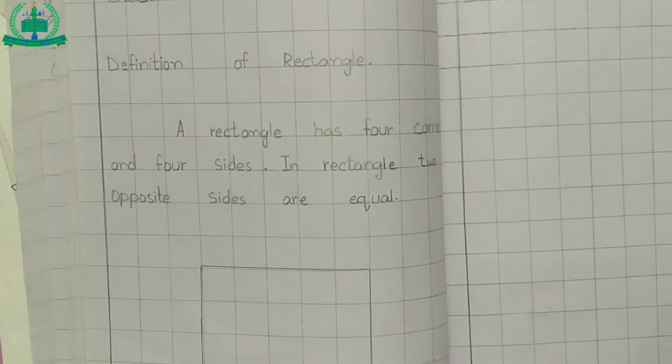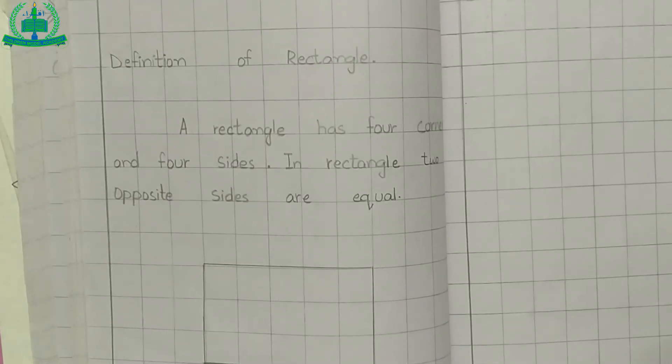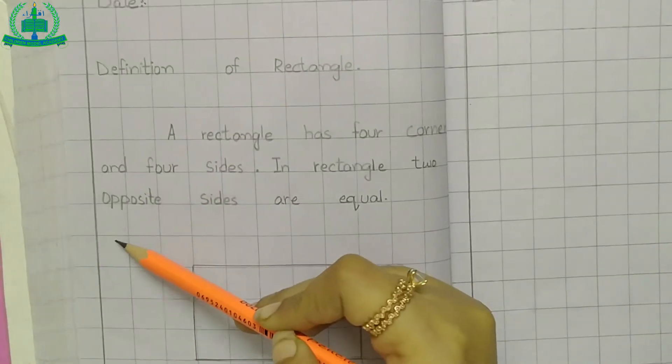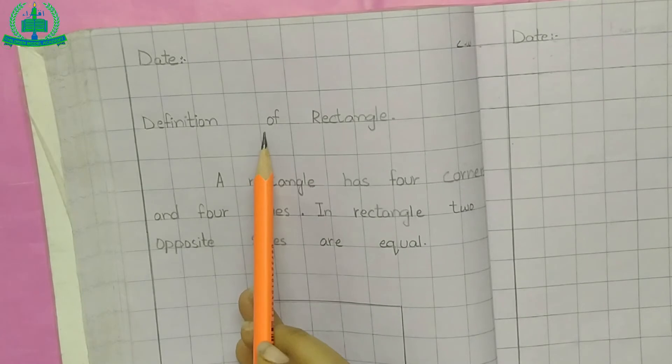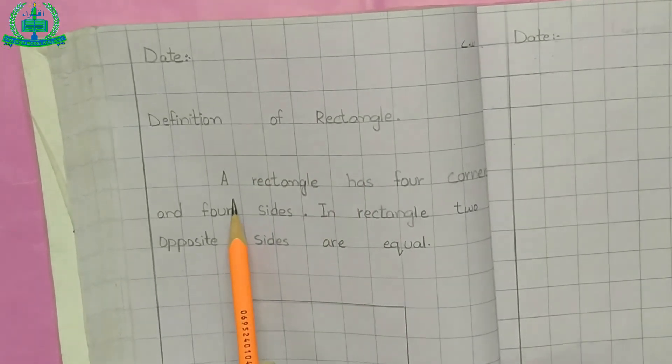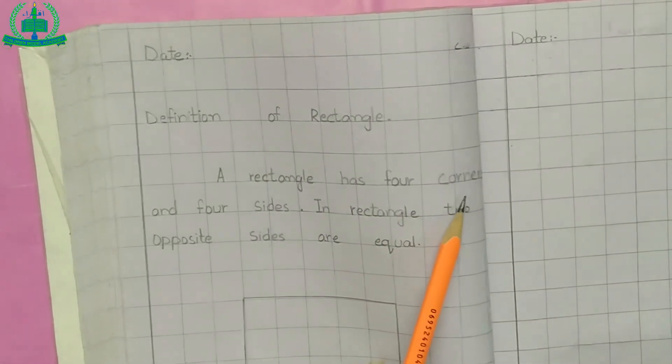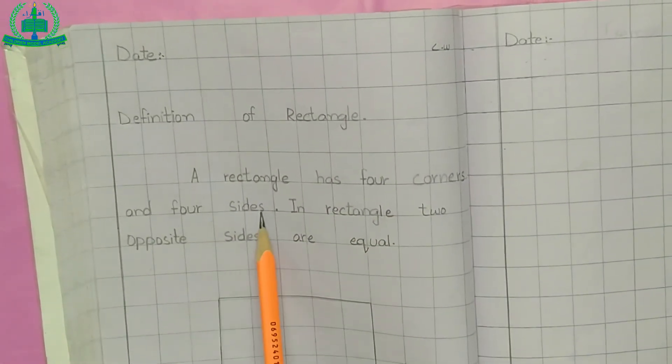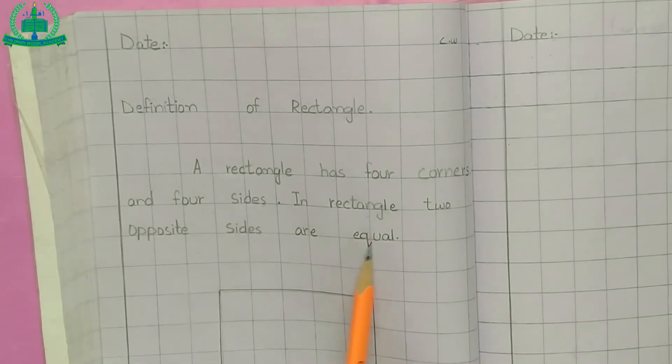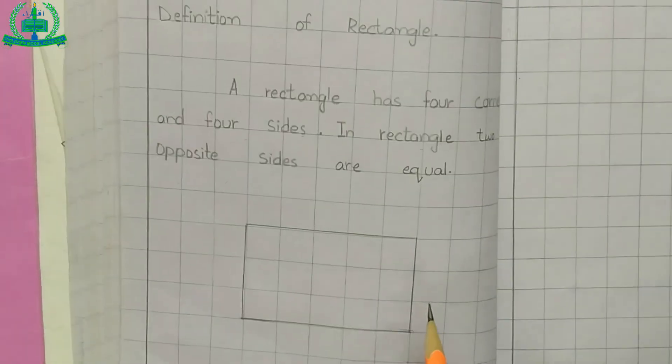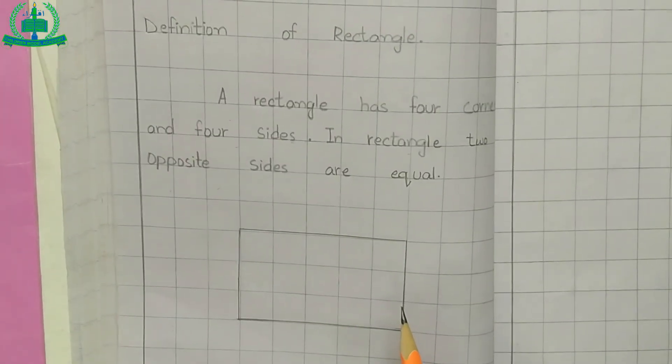Now I am explaining the definition of rectangle. Draw margin line, mention date, mention classwork. Then write definition of rectangle: A rectangle has 4 corners and 4 sides. In rectangles, 2 opposite sides are equal. Also draw a diagram of rectangle.